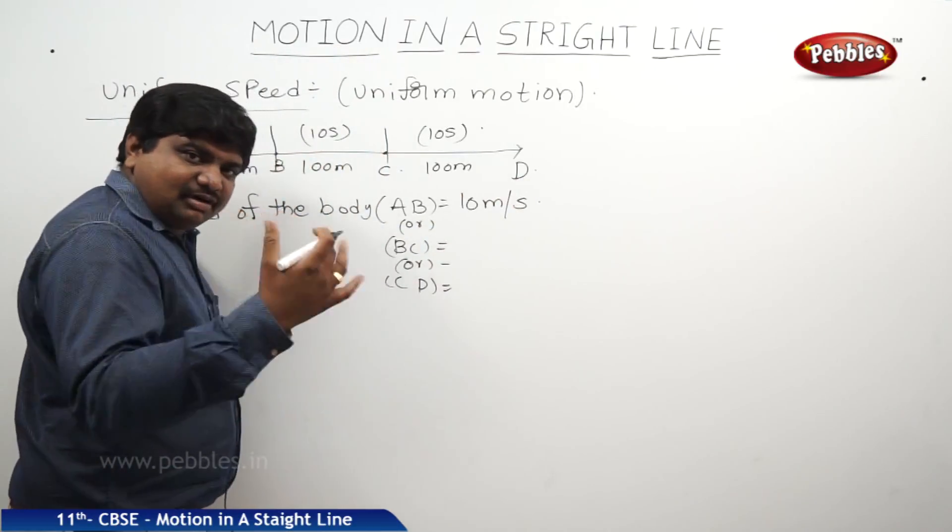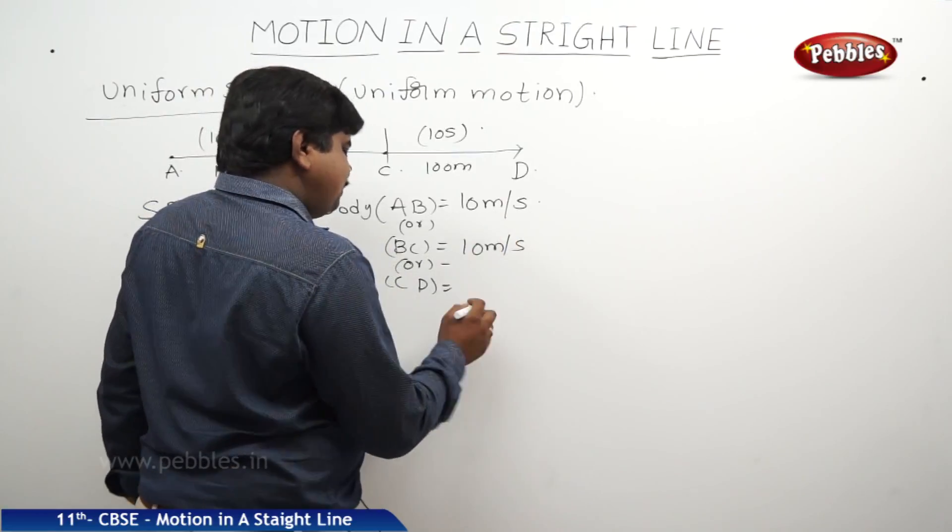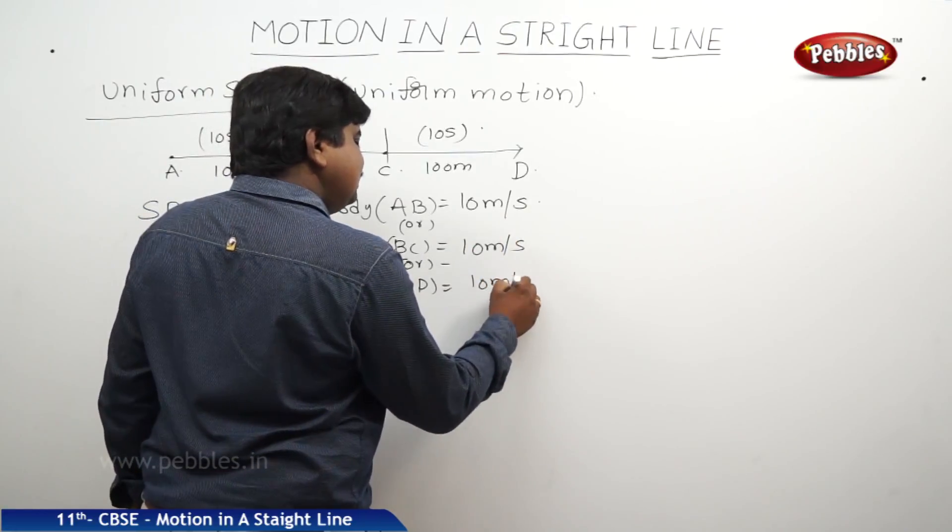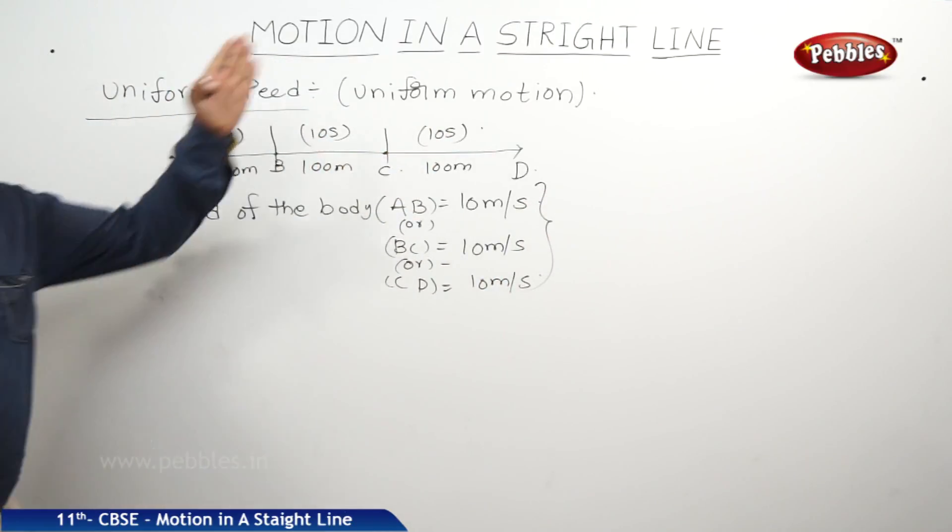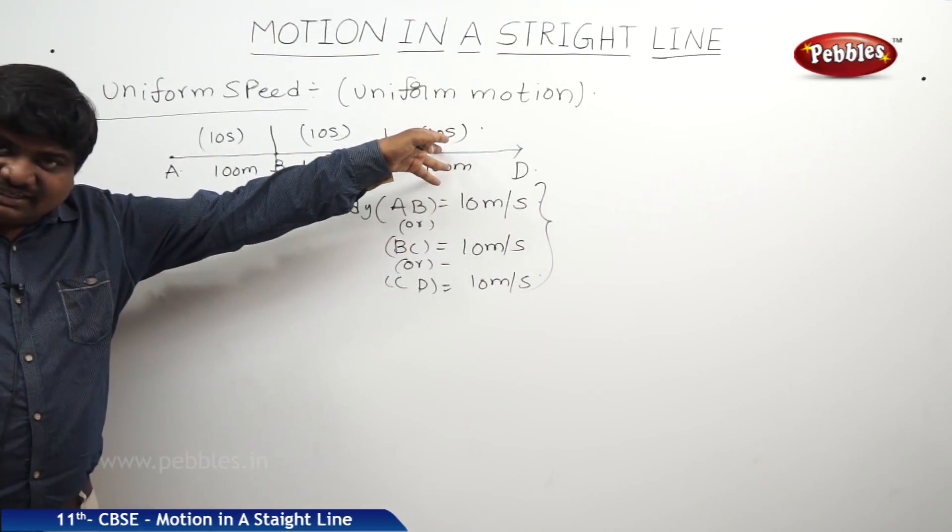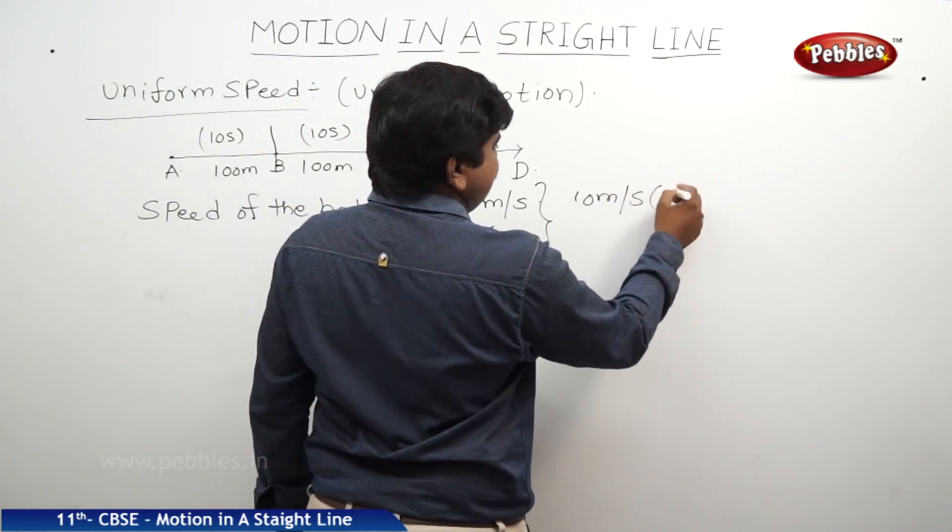A to B, it has covered with 10 meters per second speed. B to C, it has covered with the same speed. C to D also it has covered with the same speed. If you see the total journey from A to D, it is 300 meters by 30 seconds. Again you will get the 10 meters per second for total journey.